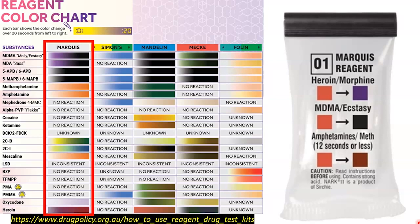Marquee reagent will give a colour response for opioids such as heroin, oxycodone and morphine, MDMA — which is molly or ecstasy — as well as amphetamines. Given the prevalence of these three drug classes, Marquee reagent is probably going to give you some really informative information quickly, and the results it gives you can be used to guide further testing.